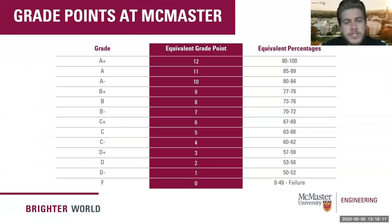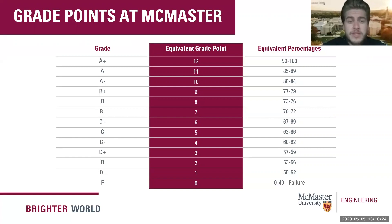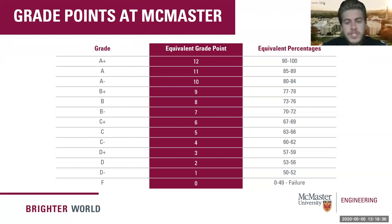At McMaster we have a 12-point grade scale which is associated with the letter grade you receive for a course. In this chart you can see from F, which is associated with a zero in equivalent grade points, all the way to a 12, which is equal to an A+. This middle column of equivalent grade points is what we'll be using when calculating your GPA.